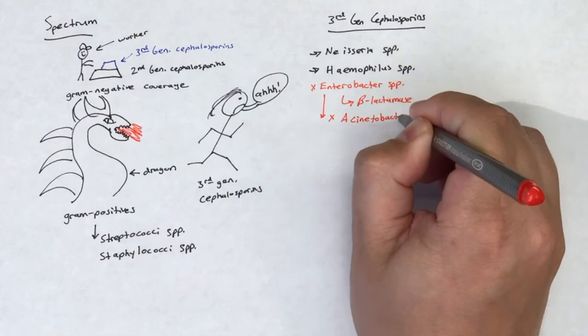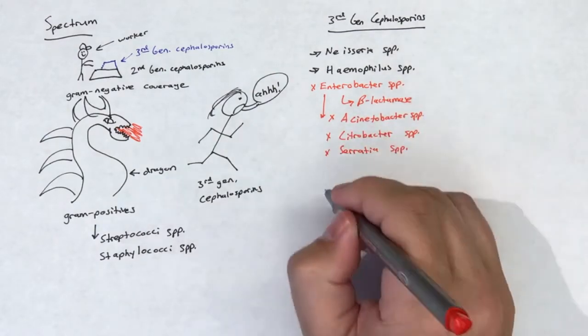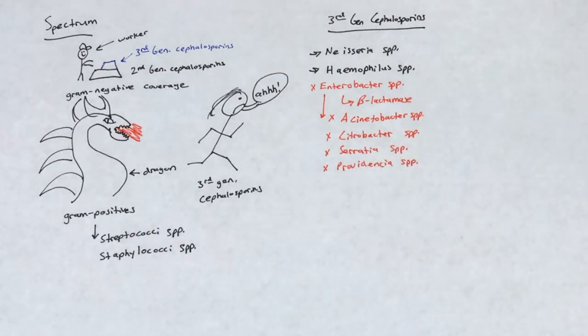Acinetobacter species, Citrobacter species, Serratia species, and Providentia species also can produce constitutive expression of beta-lactamase.